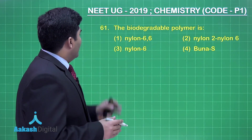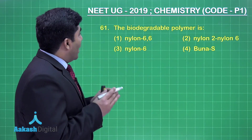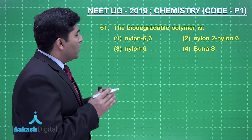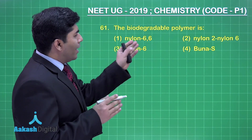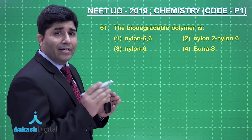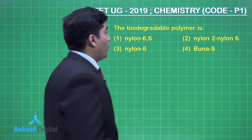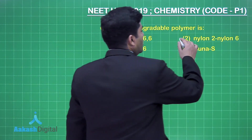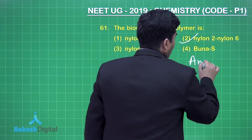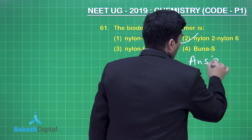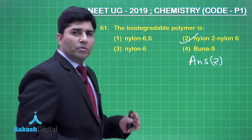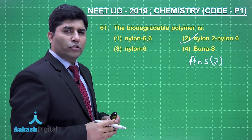In this question, it is asking which is the biodegradable polymer. The answer is nylon 2-nylon 6, as it is a biodegradable polymer. That's why our answer is option number 2. Let's move on to the next question.